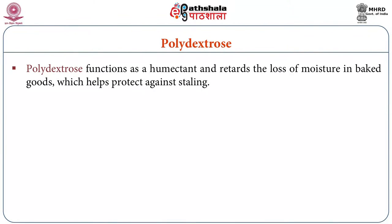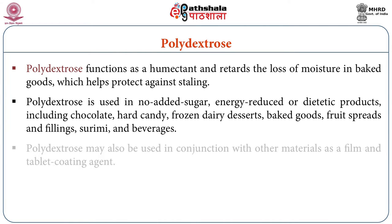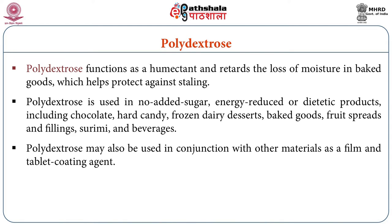The next is polydextrose. Polydextrose functions as a humectant and retards the loss of moisture in baked goods, which helps protect against staling. It is used in no-added-sugar, energy-reduced, or dietetic products including chocolate, hard candy, frozen dairy desserts, baked goods, fruit spreads and fillings, surimi, and beverages. Polydextrose may also be used in conjunction with other materials as a film and tablet coating agent.